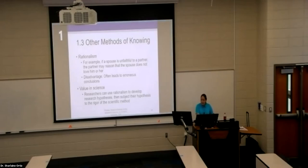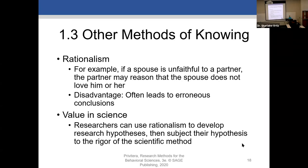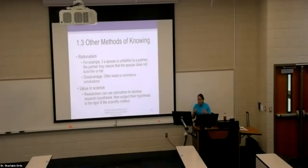Now let's talk about rationalism as a method of knowing. By definition, rationalism is any source of knowledge that requires the use of reasoning and logic. That sounds pretty solid - I'm using reasoning and logic to come to a conclusion. But why could it be faulty? A familiar logical example: if it looks like a duck and quacks like a duck, it must be a duck. But what are you basing that on? It could be a plush toy, somebody dressed as a duck, or a toy.